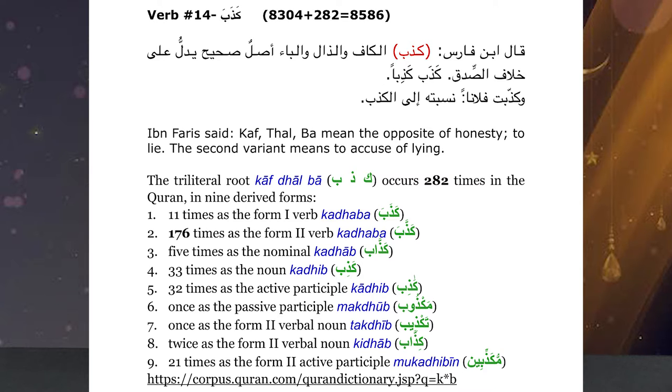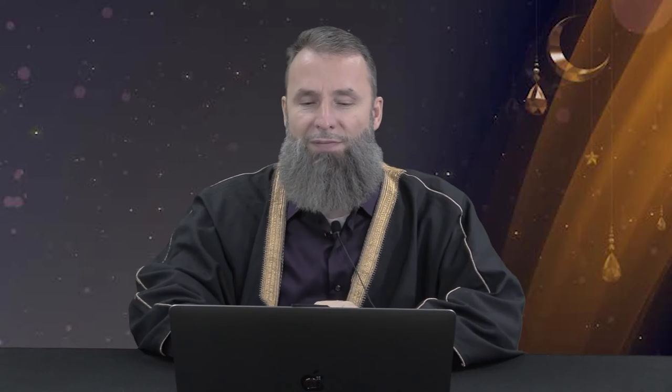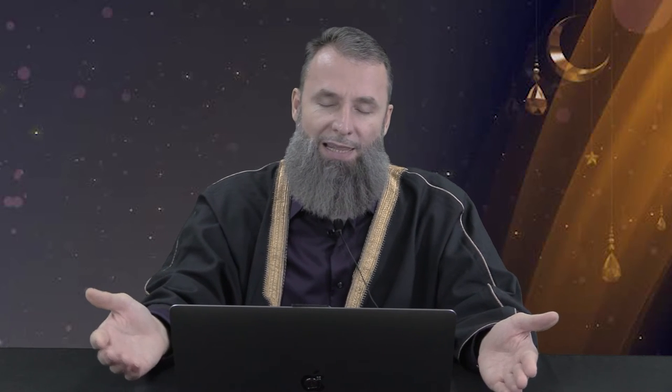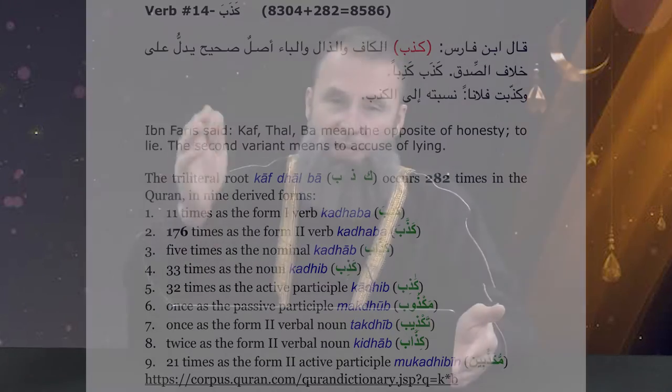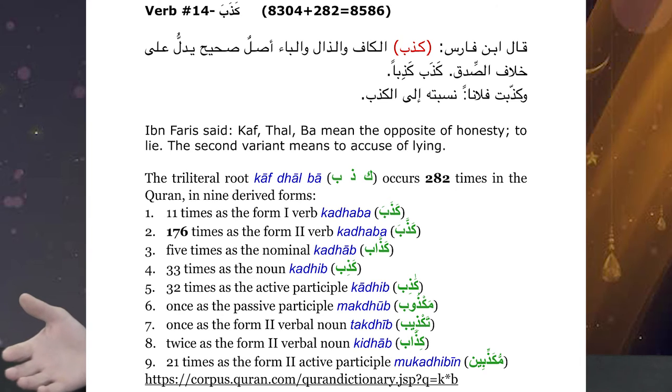The second bullet shows us that 176 times, Allah azza wa jal uses it in the form of kathaba — the past tense for 'he,' meaning 'he belied' or 'he claimed to be false.' We see throughout the Quran so many times: kathaba bihi, kathaba bihi qawmu nuhin, wa kathaba bihi — whoever it is claiming that their prophet was not speaking the truth, that their messenger was a liar, or that the scripture revealed was false.